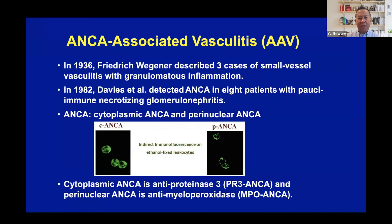So in 1936, Friedrich Wegener first described three patients with small vessel vasculitis and glomerular inflammation. So in 1982, Davis and his colleagues detected this ANCA in eight patients with pauci-immune necrotizing glomerulonephritis.